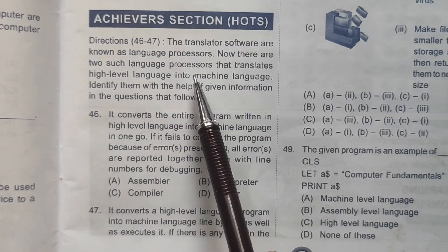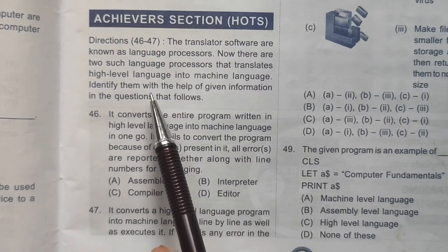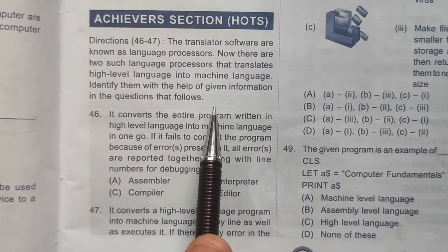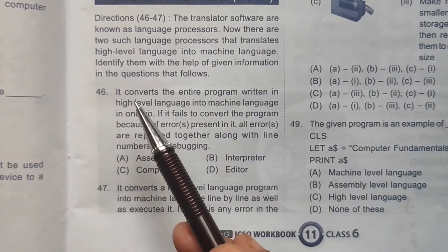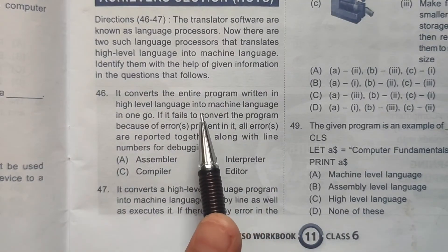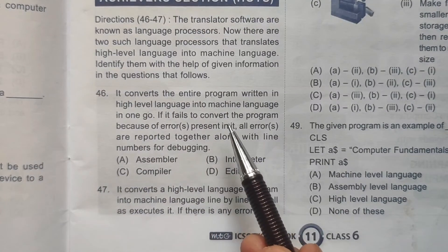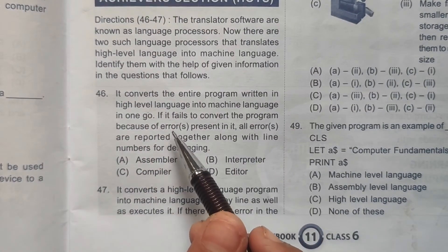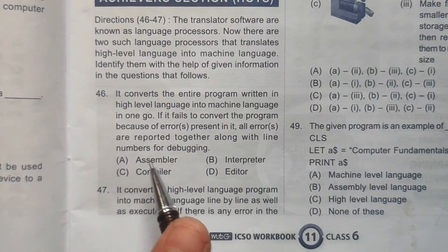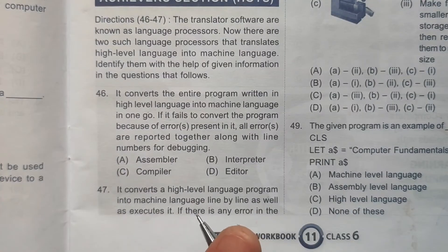Achiever Section, Questions 46-47: Translator software are known as language processors. There are two such language processors that translate high-level language into machine language. Question 46: It converts the entire program written in high-level language into machine language in one go. If it fails due to errors, all errors are reported together along with line numbers for debugging. This is done by a compiler. Correct answer: option C.